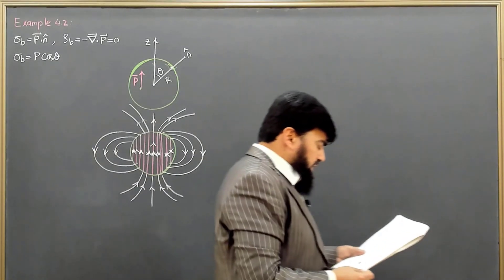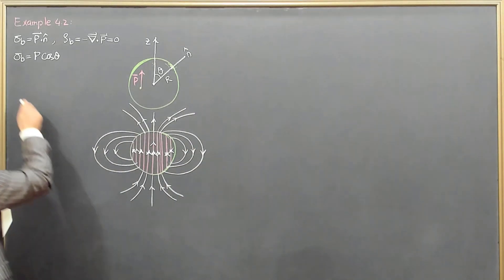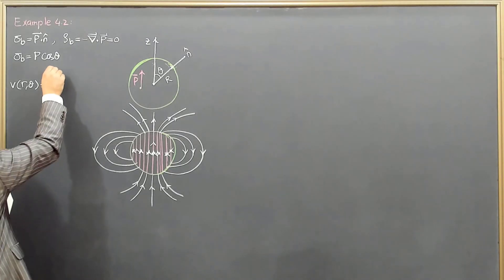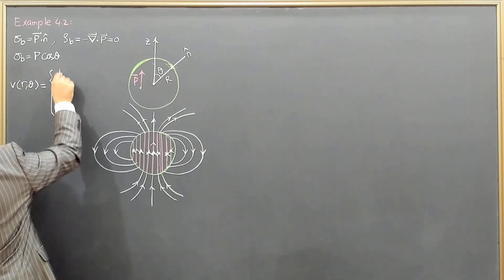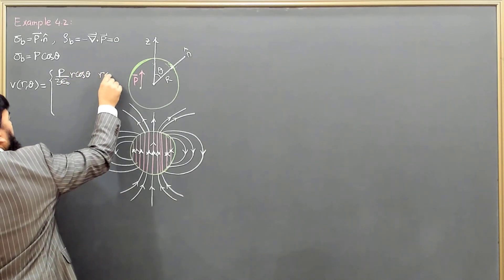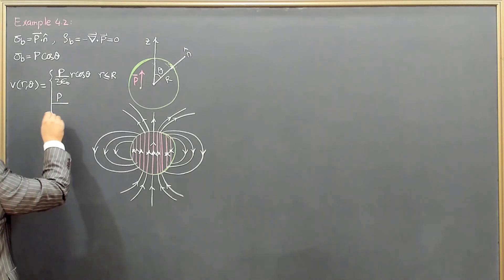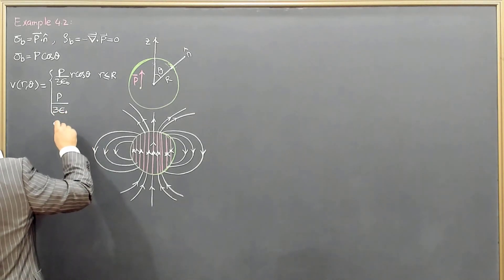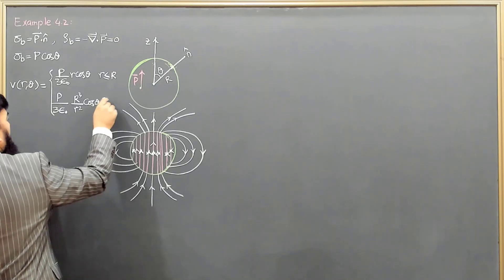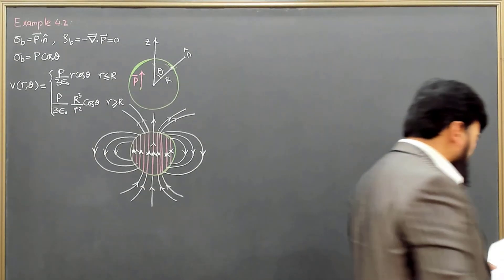For this geometry, we have already found the potential in example 3.9. The potential V(r, θ) equals P over 3ε₀ times r cos θ for r less than or equal to R (inside the sphere), and equals P over 3ε₀ times R³ over r² times cos θ for r greater than or equal to R (outside the sphere).